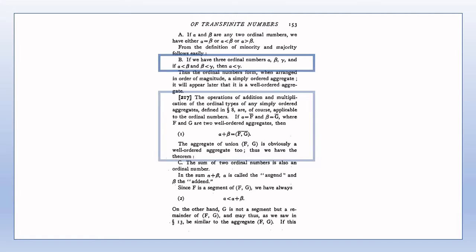Addition of ordinal numbers is a special case of addition of ordinal types and so needs no additional definition. That the union aggregate of F and G is well-ordered follows from Theorem E of Section 12. For example, if we have a well-ordered aggregate with only two elements E0 and E1, then replace E0 with F and E1 with G — the resulting union aggregate of F and G is well-ordered.